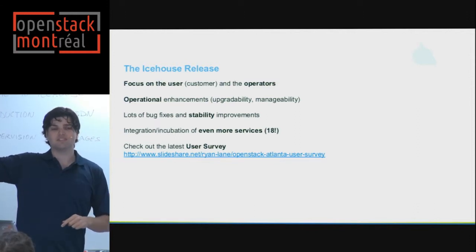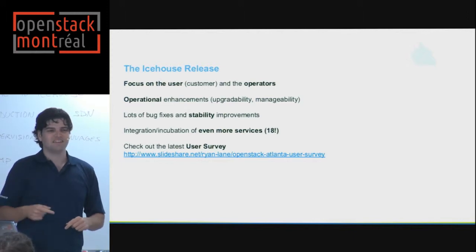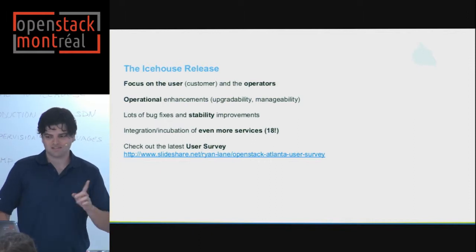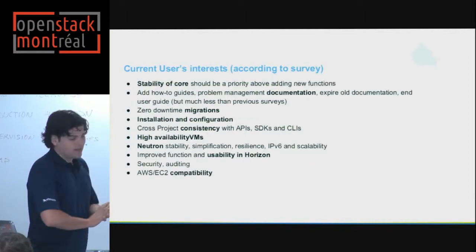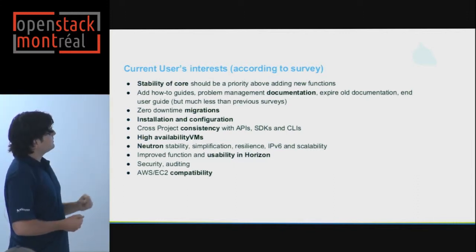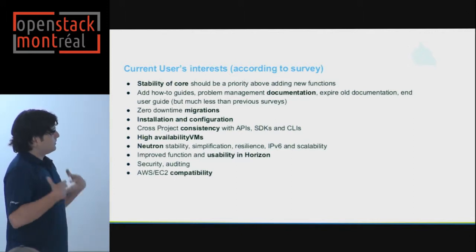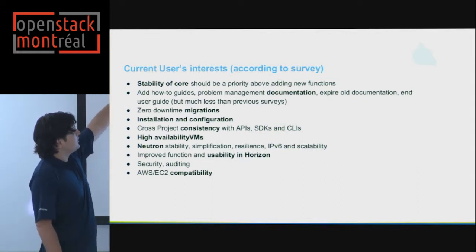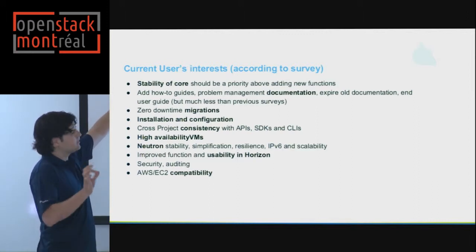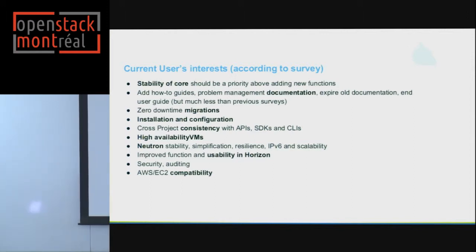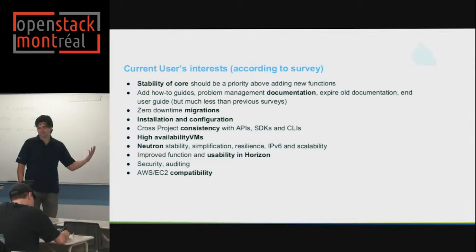CERN in Geneva, who run the Large Hadron Collider, are doing OpenStack to crunch results — it's actually one of the biggest clusters in the world. What are people looking for in OpenStack? From the latest survey: they like that it's stable but want it more stable, they like the documentation but want it better, they want zero-downtime migrations, high availability, security, and improved user interface.